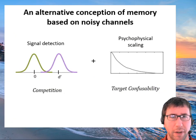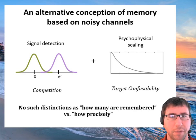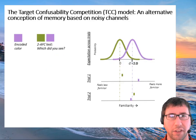And what I want to do today is tell you about an alternative conception of memory based on a population code idea based on noisy channels, but actually it's a pretty cognitive model. It's really just signal detection and psychophysical scaling. We call this the Target Confusability Competition model, and the model claims there's no such distinction as how many things are remembered versus how precisely they're remembered.